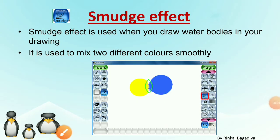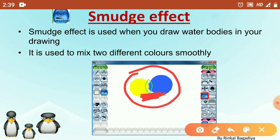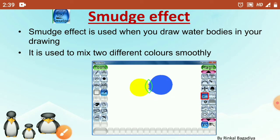Number 2 is smudge effect. As its name suggests, smudge effect will smudge two different colors. It is used when you draw water bodies in your drawing and is used to mix two different colors. As you can see on the screen, two circles are there — one is yellow and another is blue. When we apply smudge effect where the two circles meet, we can see the two different colors mixing. This gives an effect as if the colors are mixed using wet paint.